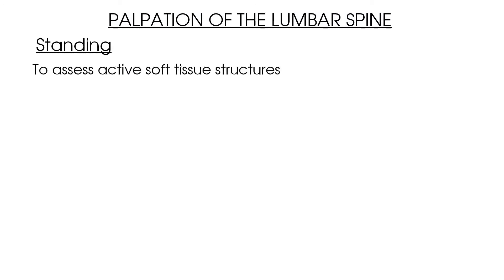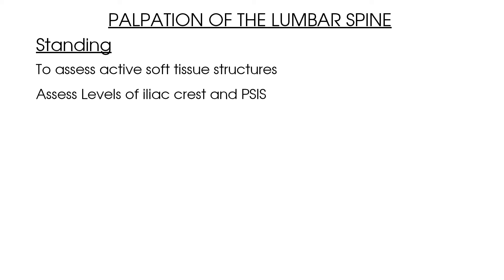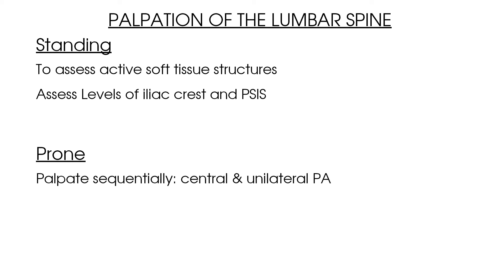To summarise: start your palpation when your patient is in a standing position to assess soft tissue structures whilst they are active, and assess the levels of the iliac crest and PSIS for symmetry. Then move to palpation with your patient lying prone, being aware of how to find your palpation points whether working top-down or bottom-up. Palpate each lumbar spine vertebra with a central PA, right unilateral PA, and left unilateral PA, assessing for pain, range, and end feel at each level.